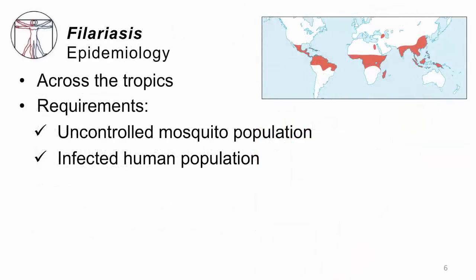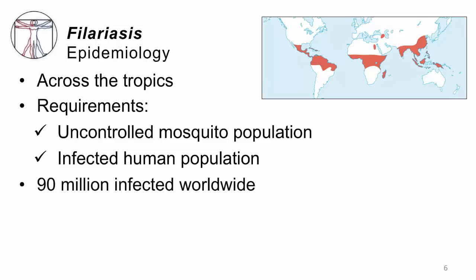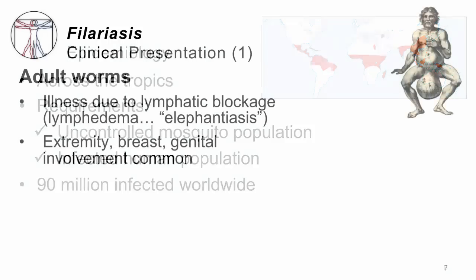The epidemiology of filariasis spans the tropics worldwide. All that's required are mosquitoes feeding on people who are infected, and evidently there are perhaps 90 million infected people globally today.